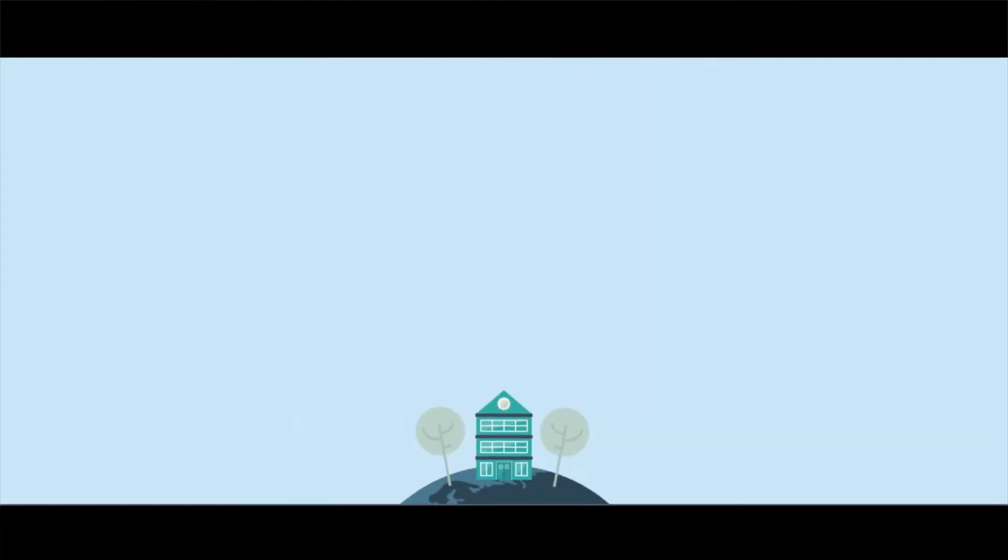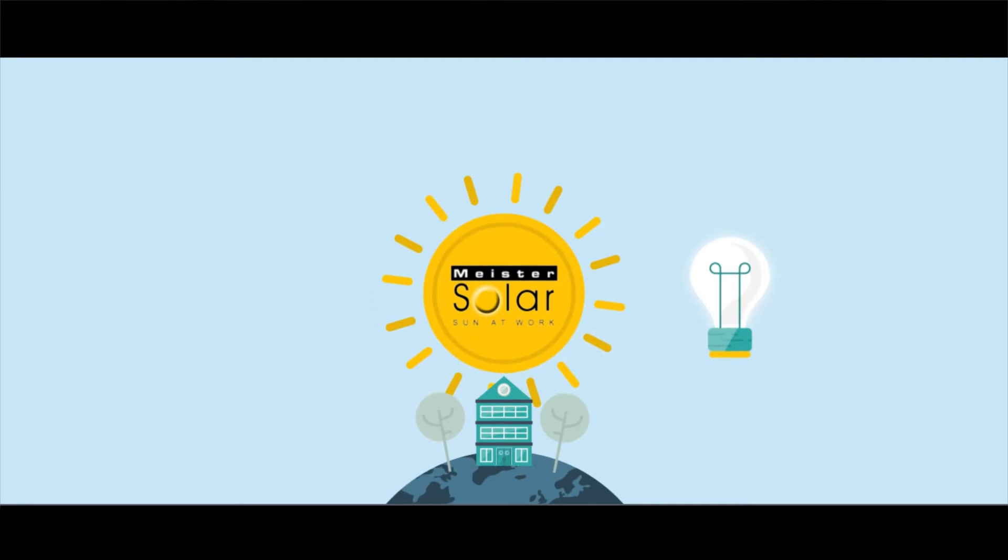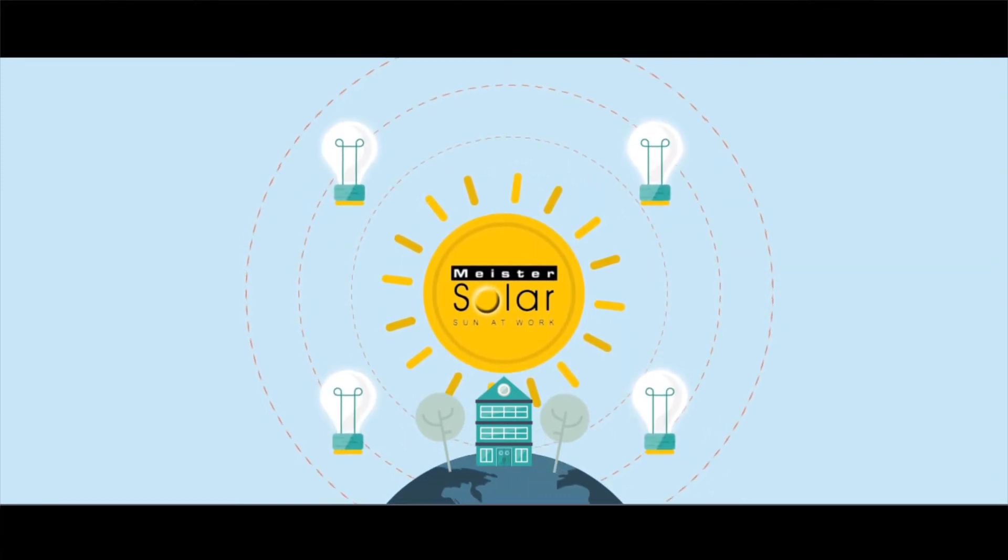Here's how it works. During the day, the sun produces energy. The greater the intensity of the sun, the more power is produced.